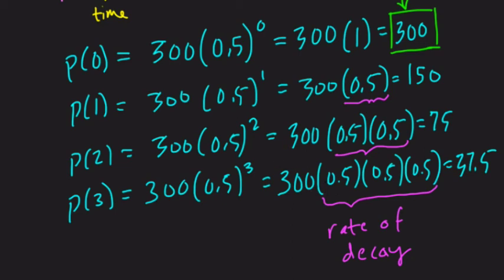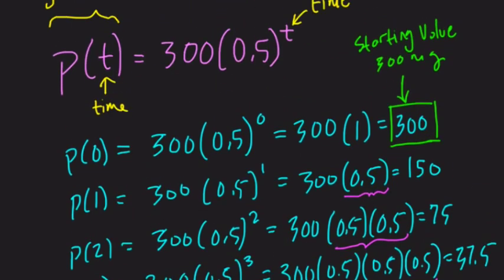So you can tell you have a decay function if this number right here is less than 1. If it's less than 1, you're going to lose value each year. So the 0.5 is called the rate of decay. And it's just the rate at which your chemical, in this case, is breaking down for a given amount of time. All right, hope this helped.